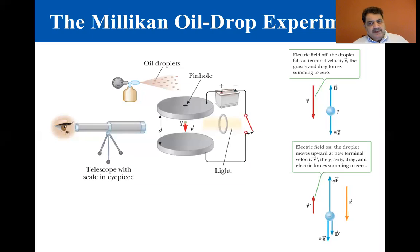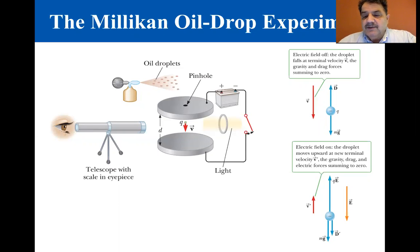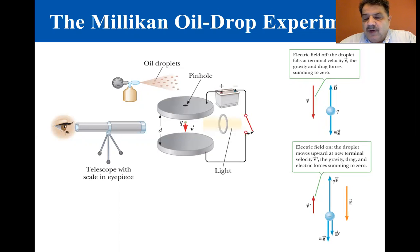We are in section 15.6, the Millikan oil drop experiment. From 1909 to 1913, Robert Andrews Millikan performed a brilliant set of experiments at the University of Chicago where he measured the elementary charge e of the electron and demonstrated the quantized nature of electric charge.